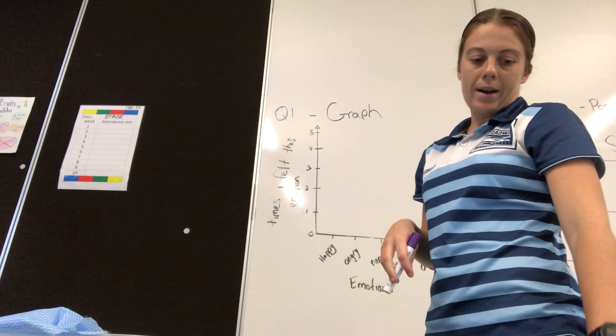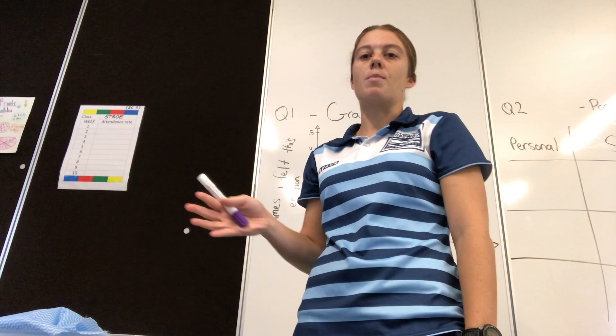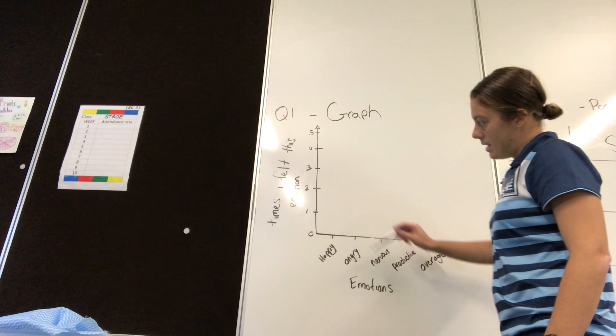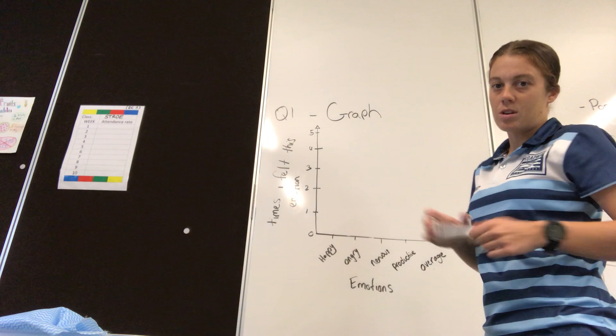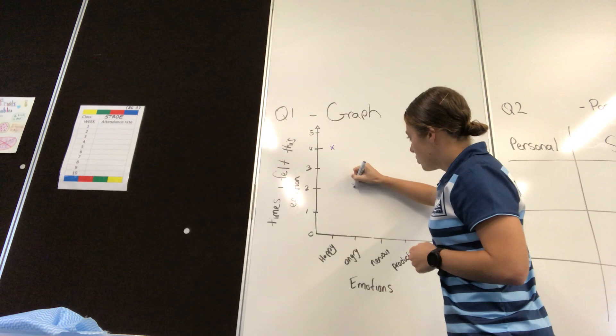I only did my mood tracker for 14 days to show you in this video. The minimum was 14 days, but if you did it for 30 days — the whole month — complete the graph and tables for the whole month. The more information, the better. 14 days is just the minimum. For my graph, I've written my emotions along the bottom and how many times I felt those emotions up the side. I was happy four times throughout the 14 days.